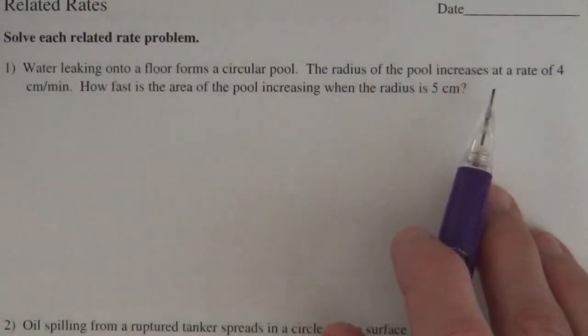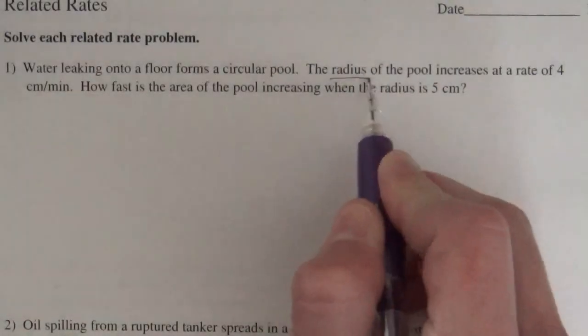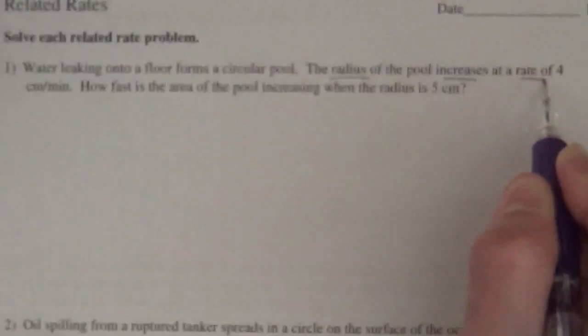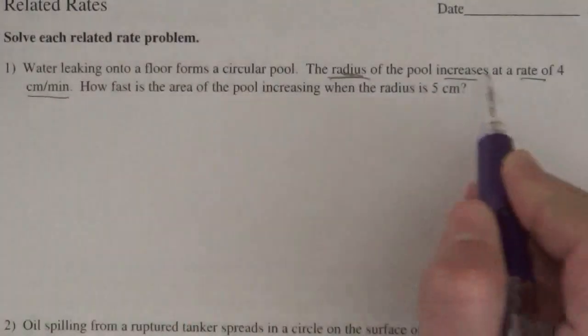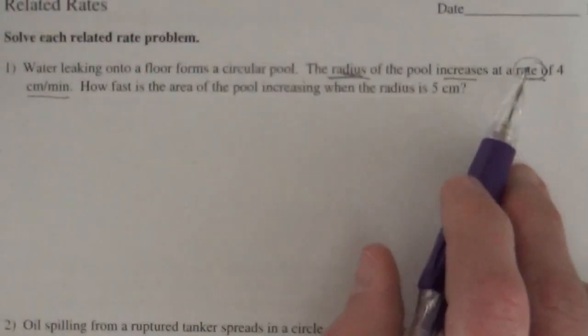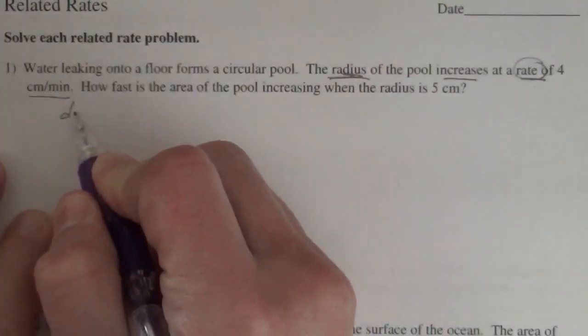We need to translate the English into math. They're telling us that the radius increases at a rate of 4 centimeters per minute. They give us the rate of the radius. Anytime they give us a rate, that's a derivative.